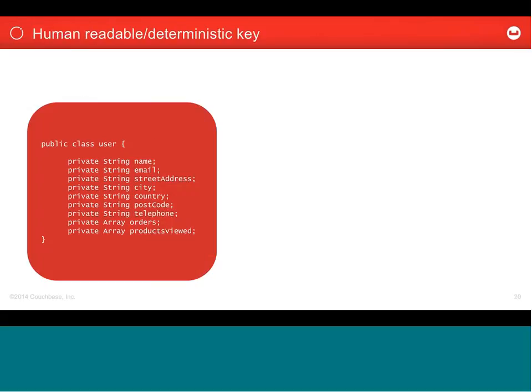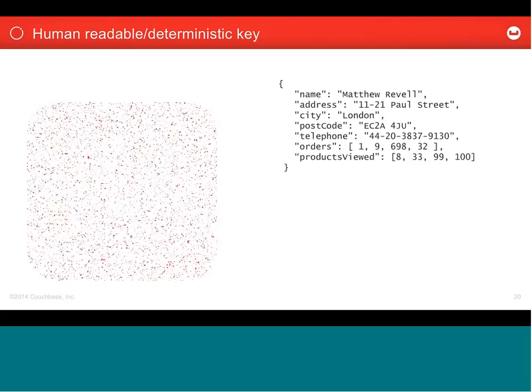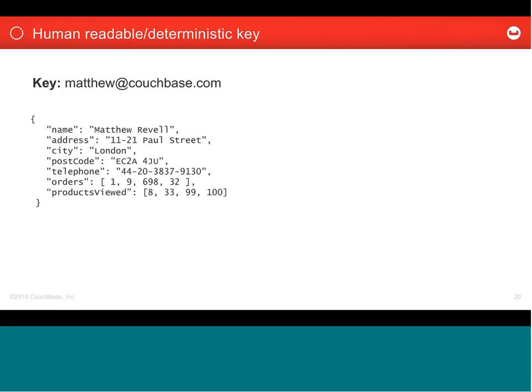Here we have a user profile modeled as a Java class with a JSON equivalent. We key it using the email address — that means when I log in with my matthew@couchbase.com email address, we can do a simple lookup on that key and get my user profile back. But what happens when I want to change my email address?